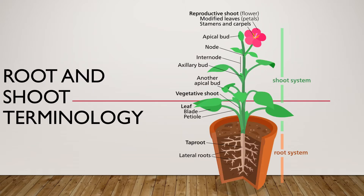Throughout this video we are going to touch on brief points of botany. In this illustration of root and shoot terminology, everything above the soil level is referred to as the shoot system, and everything below the soil level is referred to as the root system.